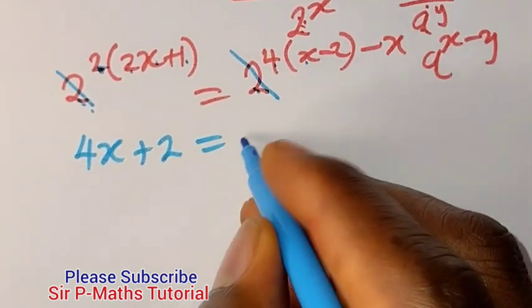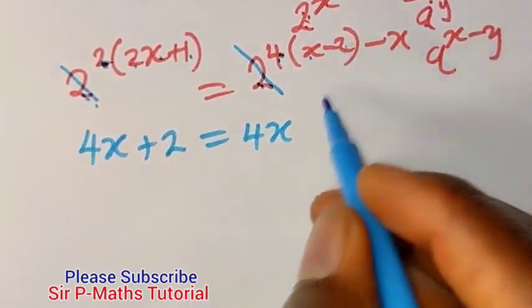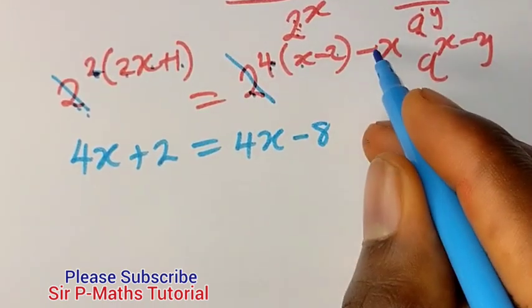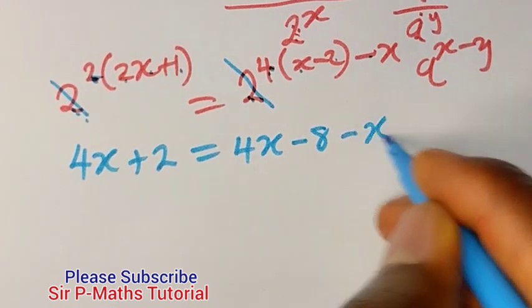4 times x will give me 4x. 4 times minus 2 will give me minus 8. Bring down your minus 8. Bring down your minus x.